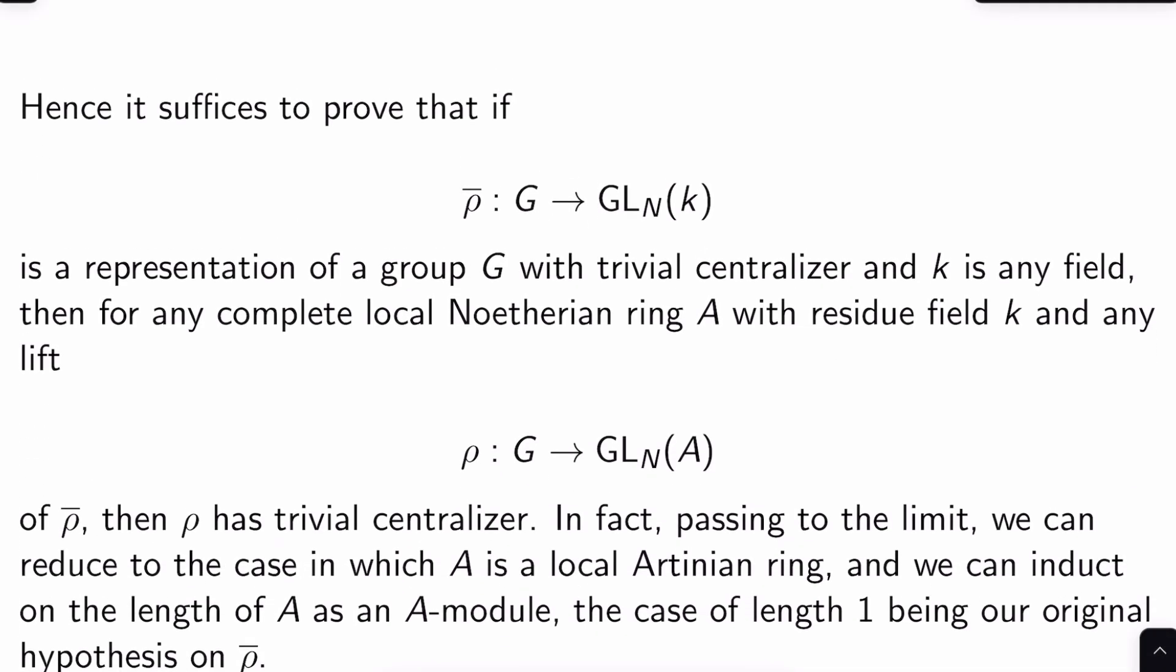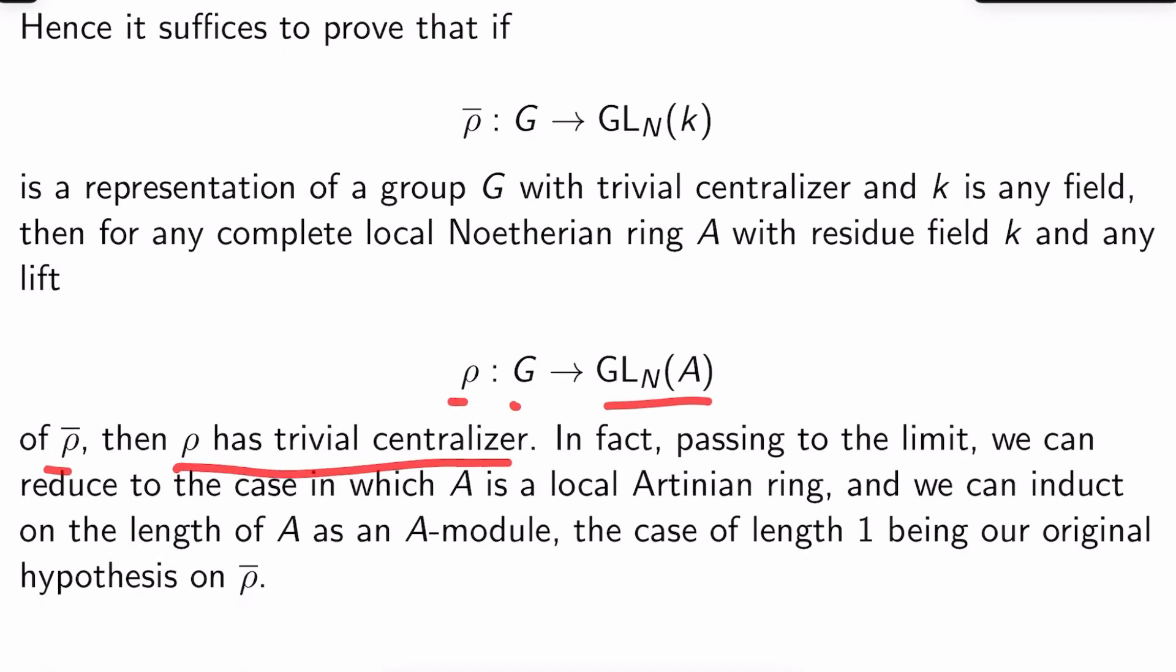In other words, it suffices to prove that if ρ̄ from G to GL_N(k) is a representation of a group G with trivial centralizer, and k is really just any field, then for any complete Noetherian local ring A with residue field k, and any lift ρ from G to GL_N(A) of ρ̄, ρ̄ has trivial centralizer.